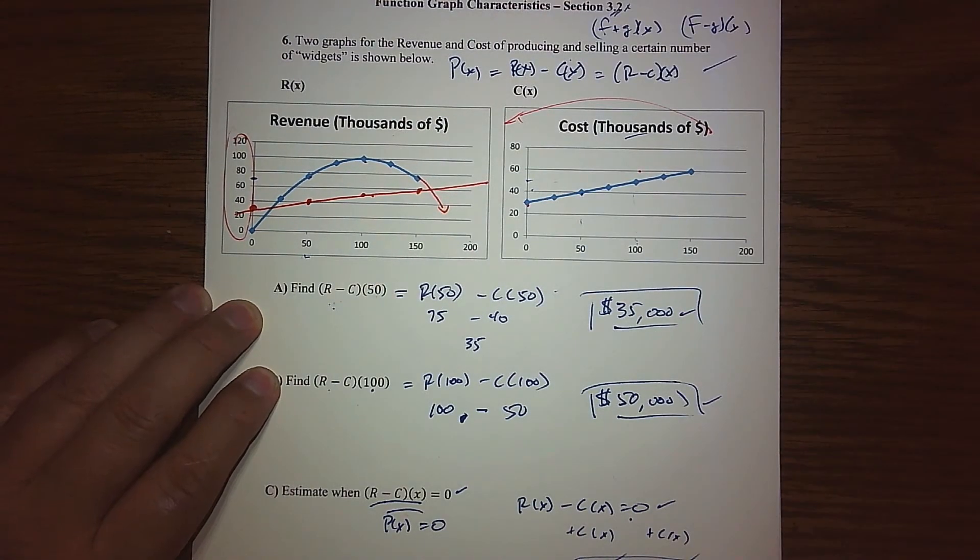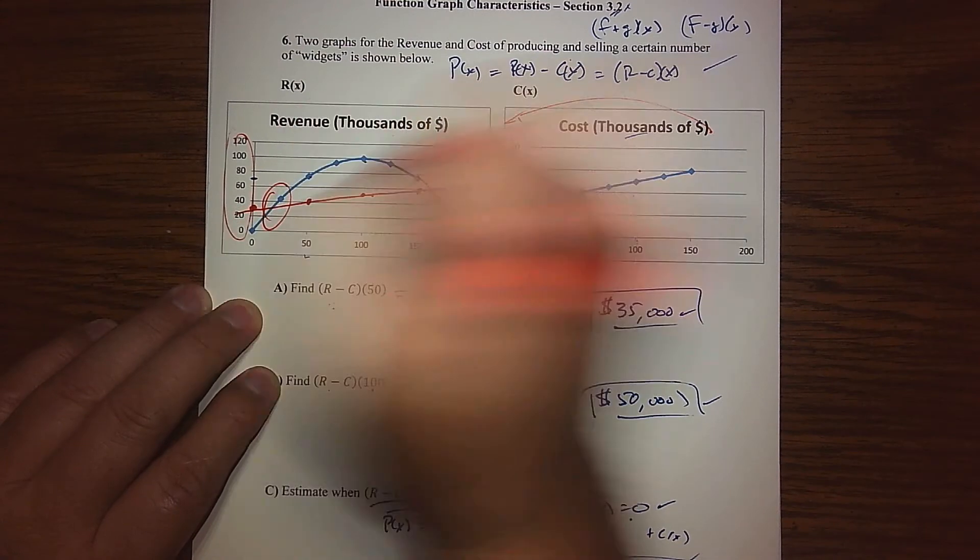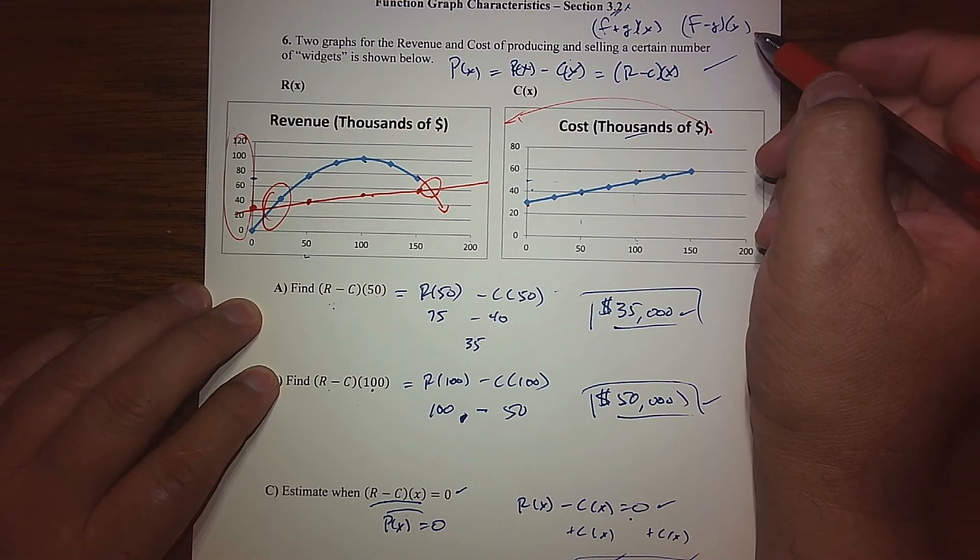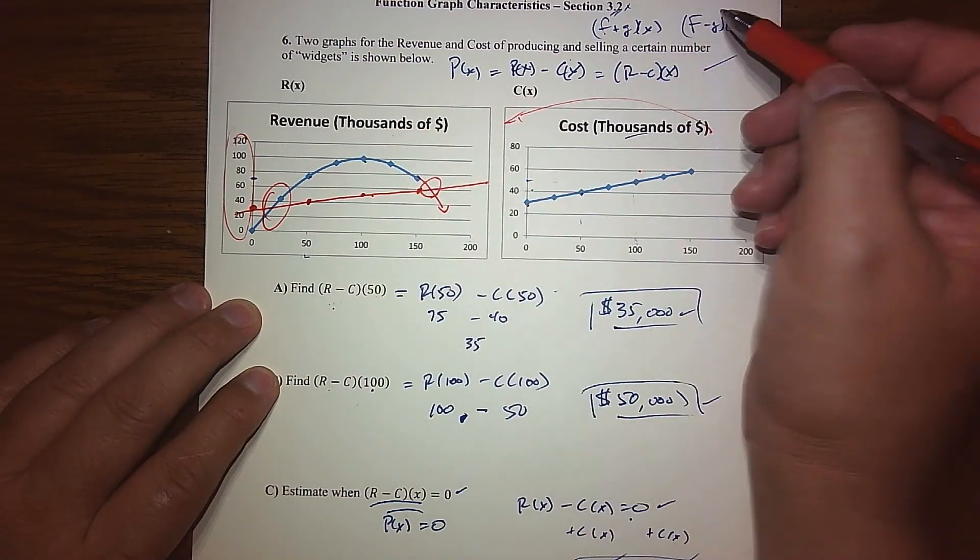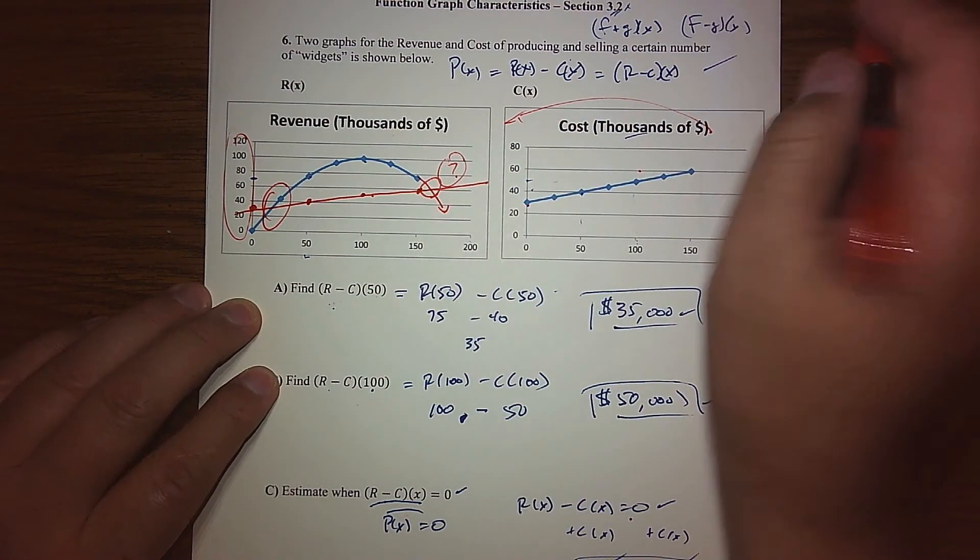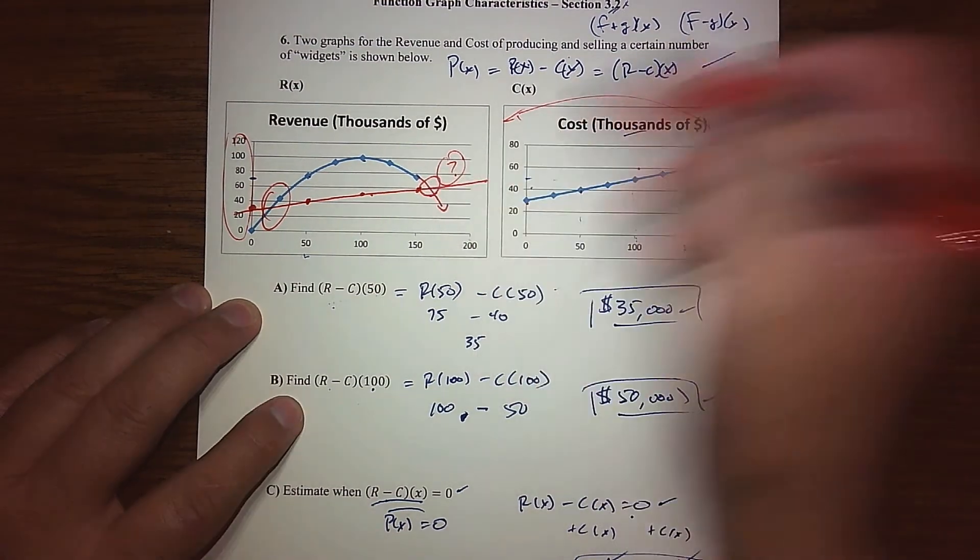If we do that and kind of mimic that, which is going to keep going down, I can see that there's one location where the profit's going to be zero and another location down here where the profit's zero, especially if we keep extending that revenue function.